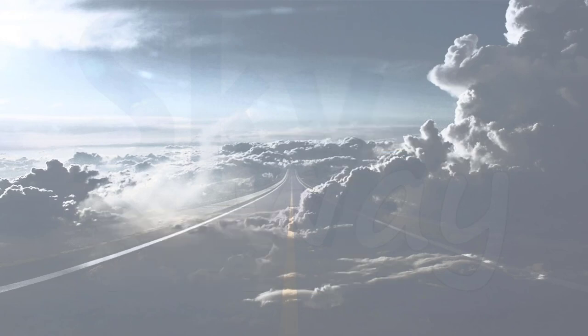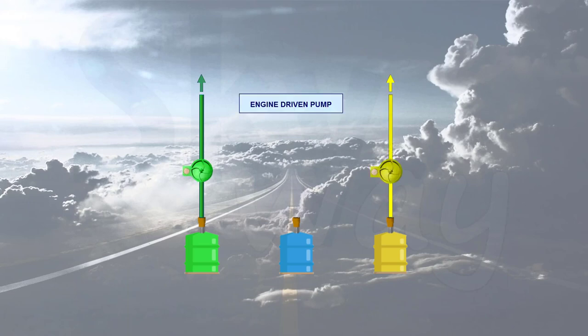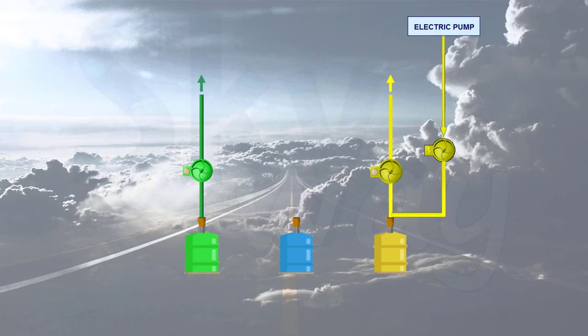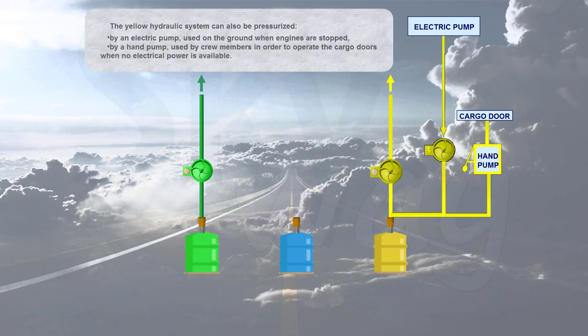The green and yellow hydraulic systems are each pressurized by an engine-driven pump. The yellow hydraulic system can also be pressurized by an electric pump used on the ground when engines are stopped, or by a hand pump used by crew members to operate the cargo doors when no electrical power is available.